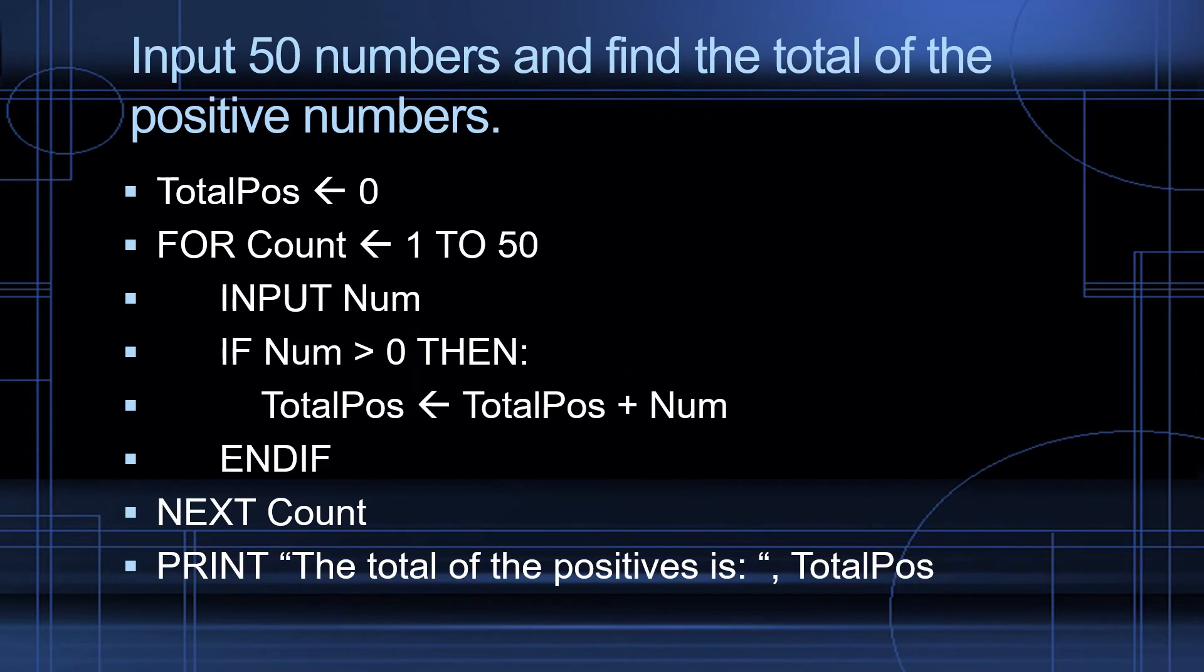For the next example, we're going to input 50 numbers and find the total of the positive numbers only. So I'll start by initializing an identifier with a name that's meaningful, total pos. And I have zero assigned to total pos. For count, count runs from one to 50. First, I'm going to input the number. Then I'm going to add some selection. If num is greater than zero, then total pos is equal to total pos plus num.